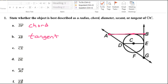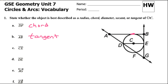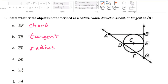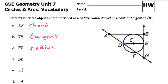How about segment CE? Here's C and here is E. Segment CE is a radius because it goes from the center out to the circle — that makes it a radius. What about segment DE? Here's D and here's E — segment DE. That is a diameter. It is a chord that passes through the center, so that is called a diameter.